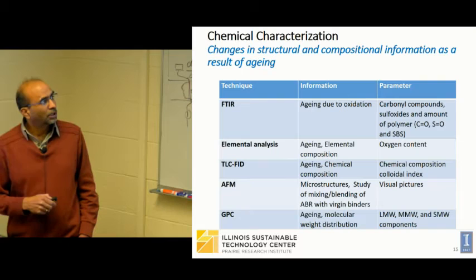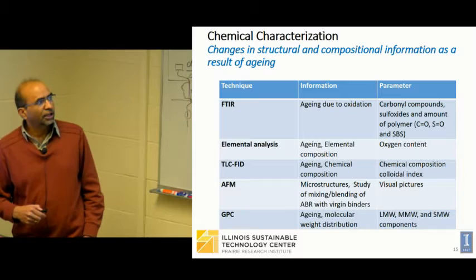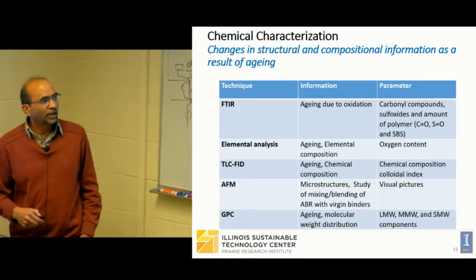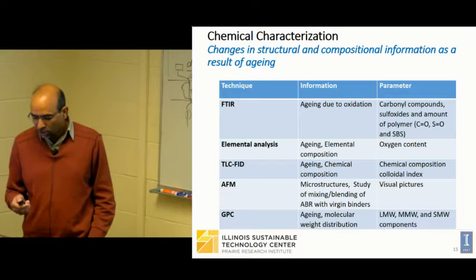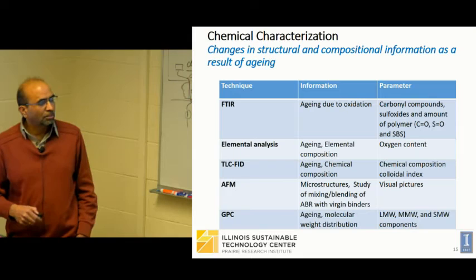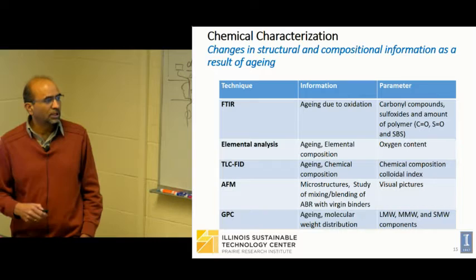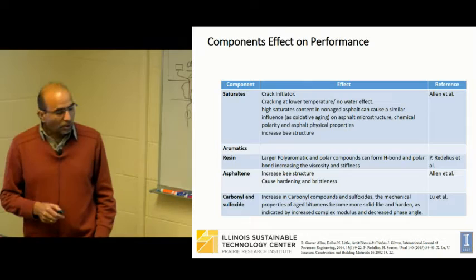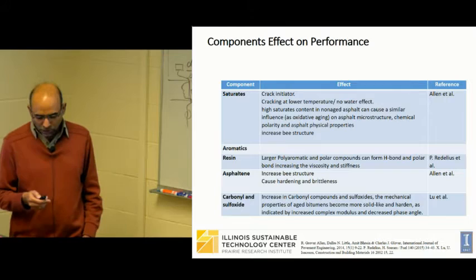Once we had all these binders, we identified the techniques to use: FTIR, elemental analysis, TLC-FID, AFM, and GPC. With FTIR we can get aging information due to oxidation and calculate carbonyl and sulfoxide parameters. From elemental analysis we can get oxygen content. From TLC-FID we get SARA components — saturates, aromatics, resins, and asphaltenes. From AFM we can look at microstructures. From GPC we can get large molecular weight, medium molecular weight, and small molecular weight components.